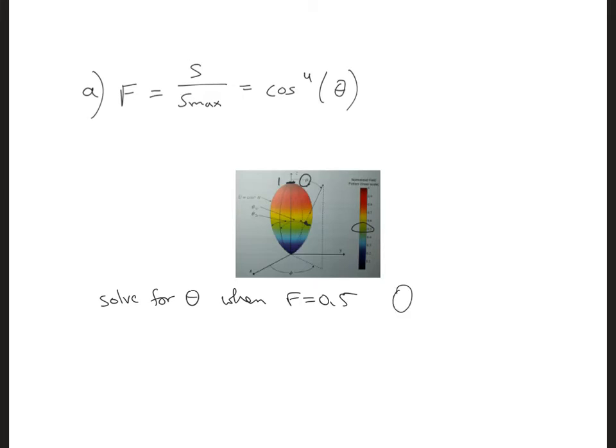And the first half power point occurs when theta is 32.765 degrees, if we want to include that many significant digits. And then along the other axis,